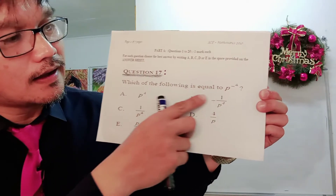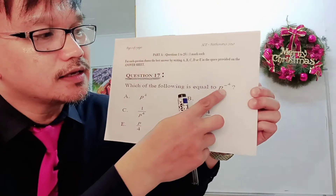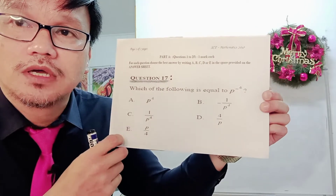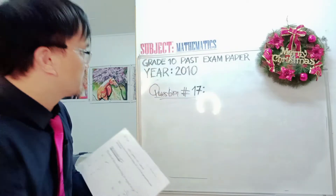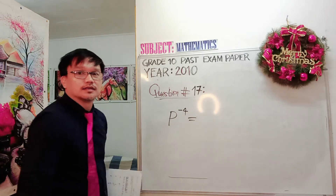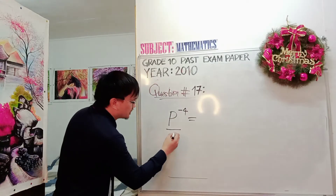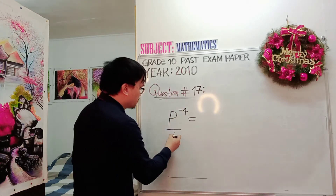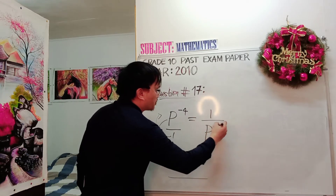When you have an index expression wherein the power is negative, we bring the negative power into positive by applying the rules. So if this one is P to the power of negative 4, then we get the reciprocal of this to make it a positive 4. The given expression is P to the power of negative 4. This is understood to have a denominator of 1, so you just get the reciprocal — you invert it, bringing P to the power up and the 1 down. So this becomes 1 over P to the power of positive 4.